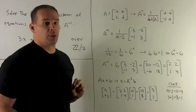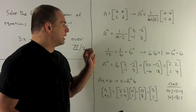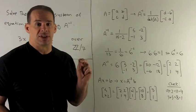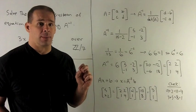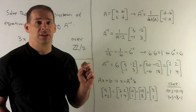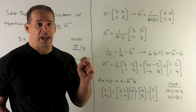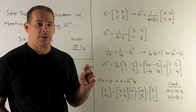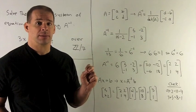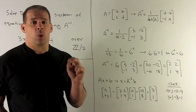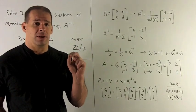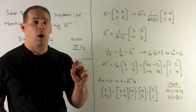Now, we want to clean this up so that we can use it. I'm going to need to know what 1 over 13 is. Since I'm in Z7, we really don't deal with fractions there. We always try to get our numbers between 0 and 6. Well, 1 over 13 is going to be the same as 1 over 6. So I'm going to need to find what 6 inverse is, or what number times 6 gives me 1.